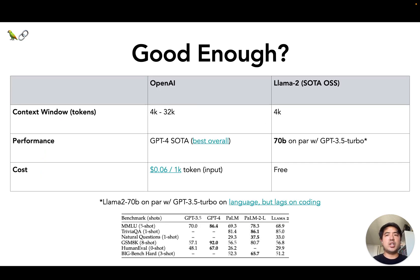And recent benchmarks suggest that this is becoming the case. The largest variant of a recent state-of-the-art open source model, LLAMA 2 from Meta, stacks up quite well with GPT-3.5 Turbo on language benchmarks. Though it lags behind on coding benchmarks, it of course has the added benefit of being free and completely private.